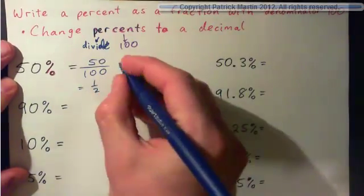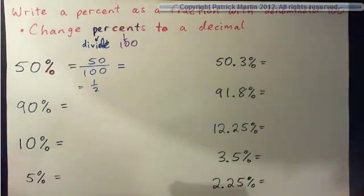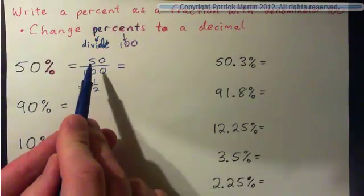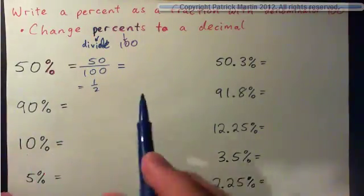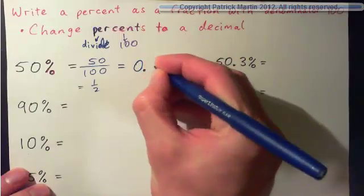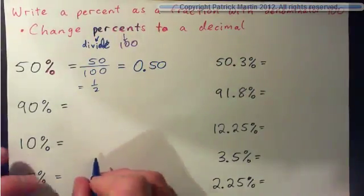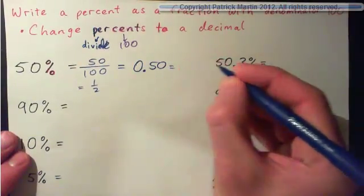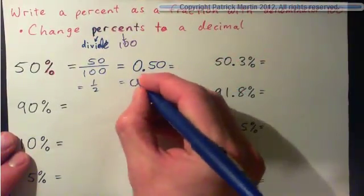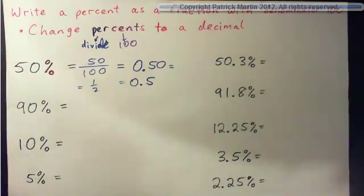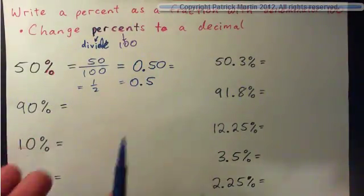Now what we're going to do is write this as a decimal as well. We've got 50 hundredths. So as a decimal, that's 0.50 for 50 hundredths. Now 50 hundredths is the same thing as 5 tenths or just 0.5. So I hope we're familiar with that, that 50% can be written like this.